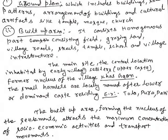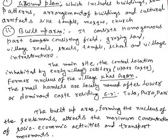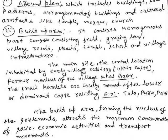Small hamlets and villages are locally named after the lower or dominant caste residing there — terms like tola, pura, and patti. The build-up area forms the nucleus of the settlements and attracts the maximum concentration of socio-economic activities, with high transport movement as well.